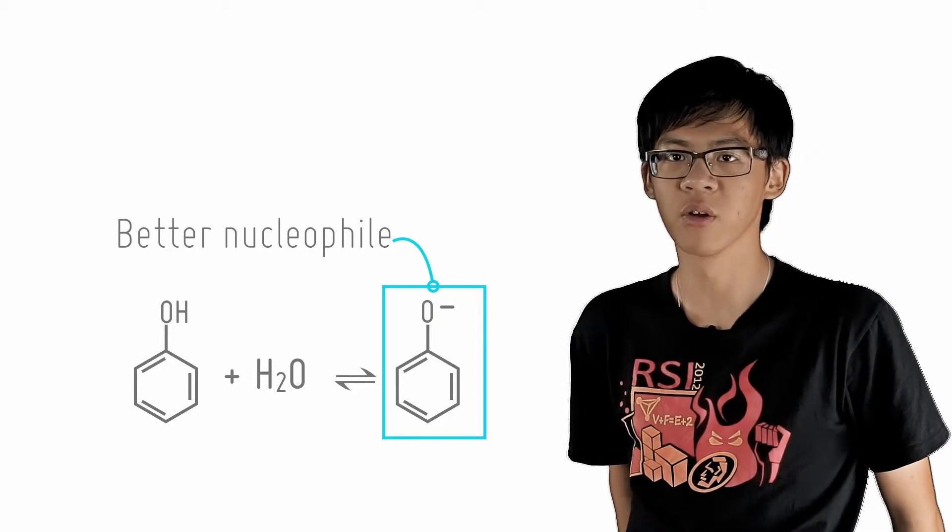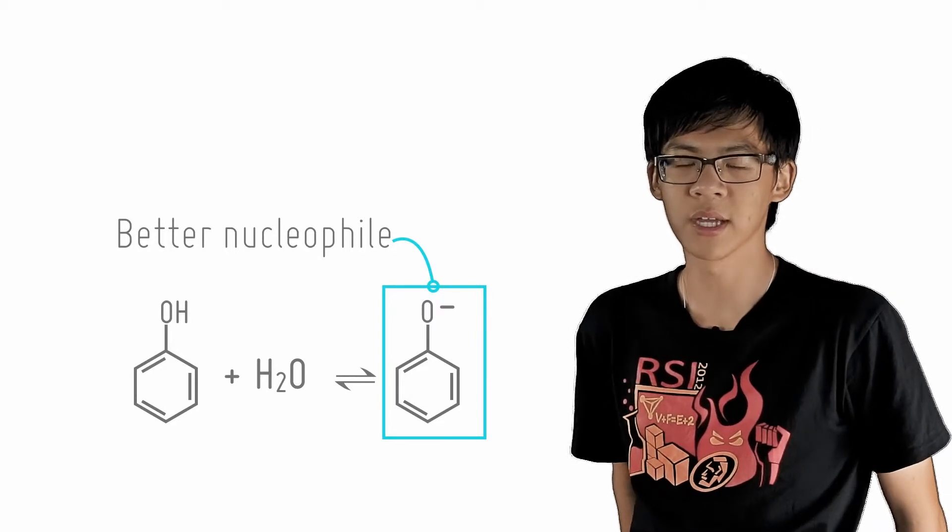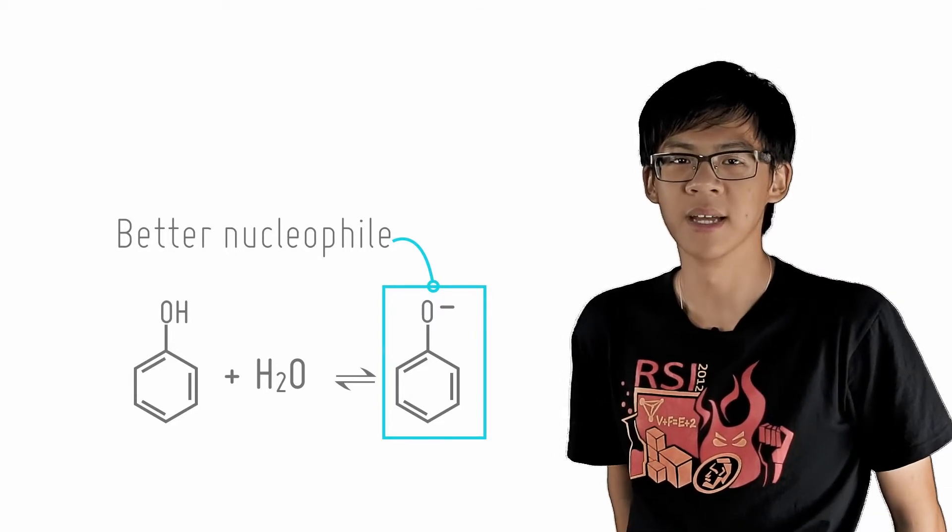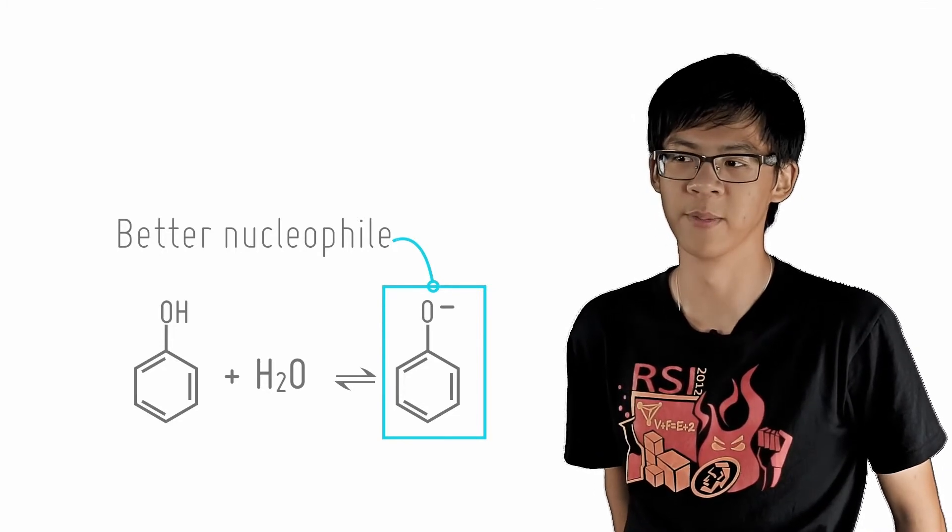Better electrophiles and nucleophiles mean that the reaction will take place more easily in water than in CCl4, resulting in polysubstitution. In summary, just like nitration, bromination of phenols is also more favorable.